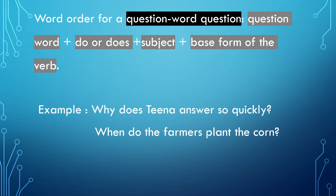In the case of question word questions, the question words are words like why, when, who, and so on. The word order goes like: the question word comes at the beginning, followed by do or does, then the subject, then the base form of the verb. For example: 'Why does Tina answer so quickly?' Here, 'why' is the question word, followed by 'does' as Tina is in the third person singular. 'Tina' is the subject, followed by the base form of the verb, 'answer.'